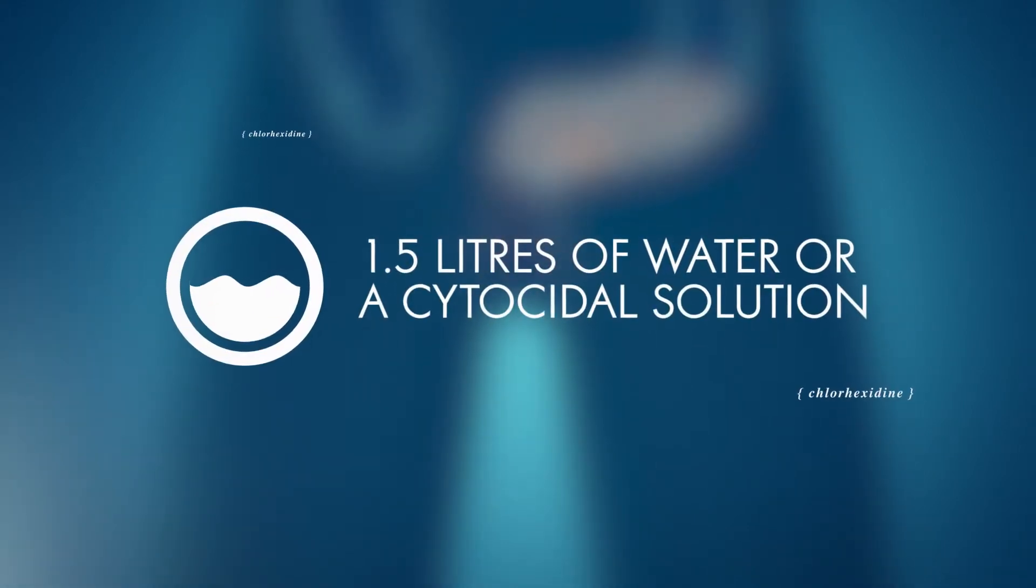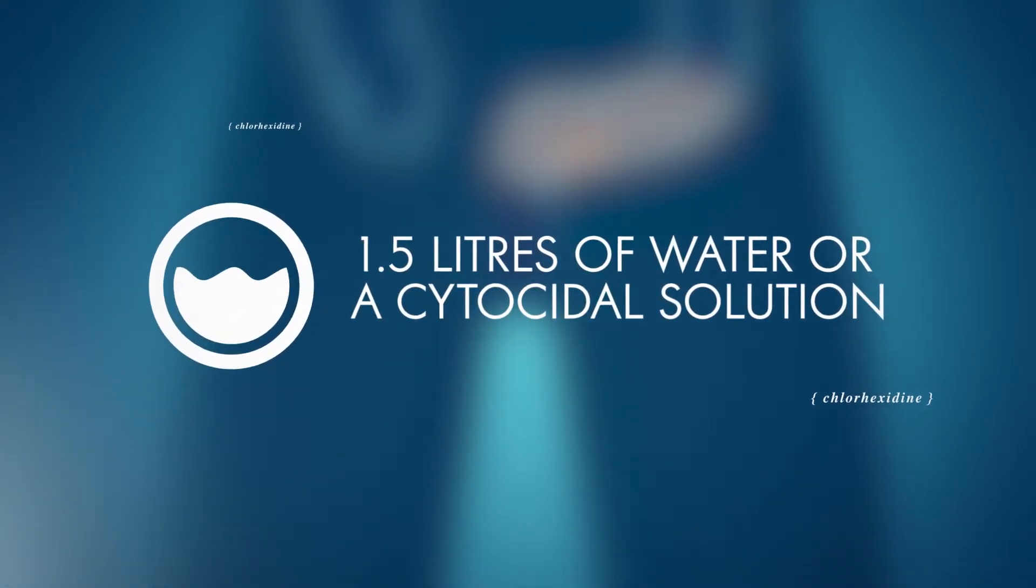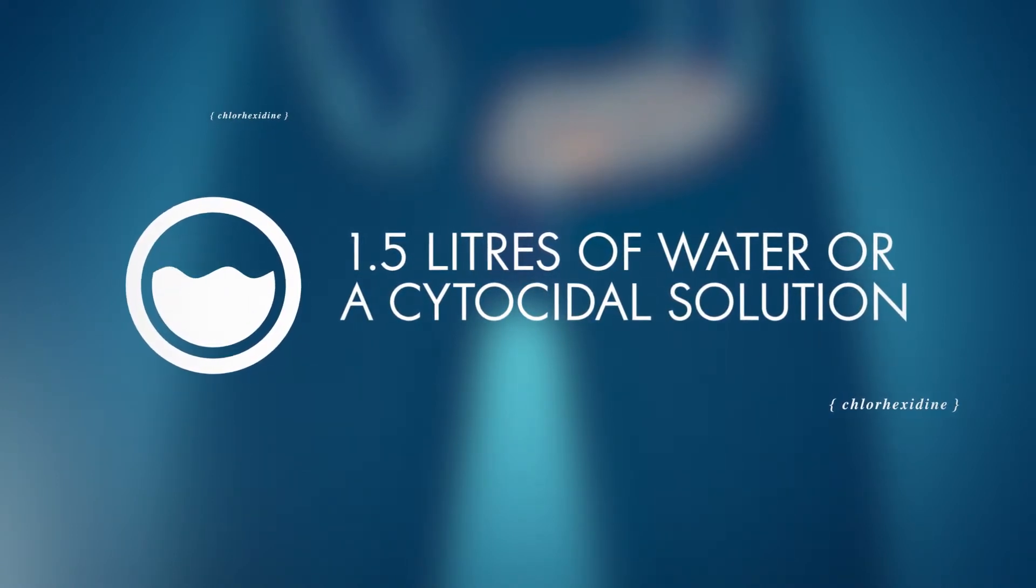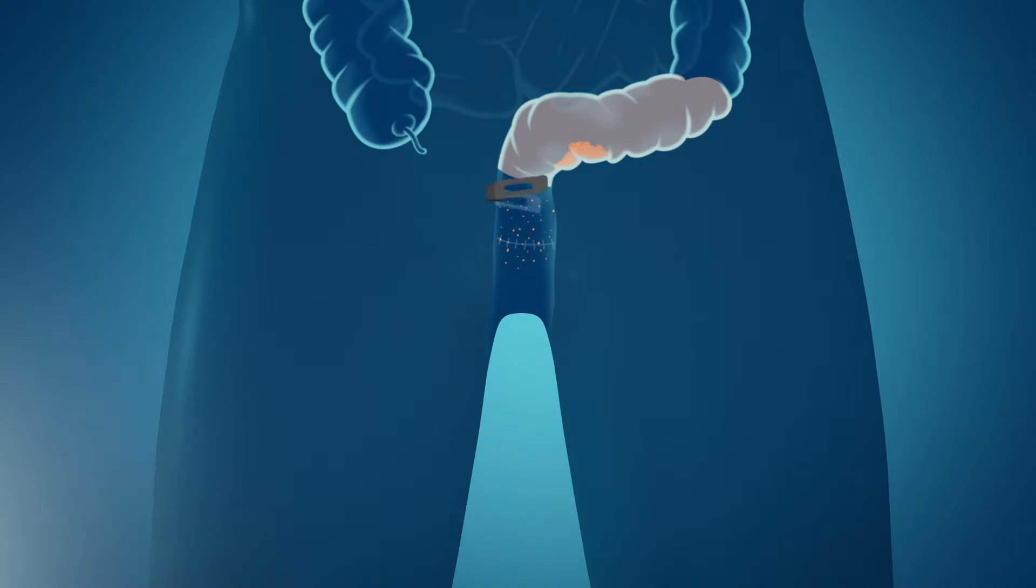A rectal washout with at least 1.5 litres of water or a cytocidal solution such as chlorhexidine has been shown to remove these cells. Typically, this is performed using a proctoscope or a Foley catheter, with the irrigation introduced by syringe, which has proven to reduce the rate of local recurrence.